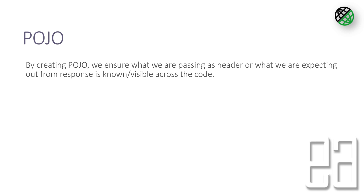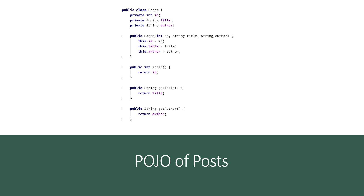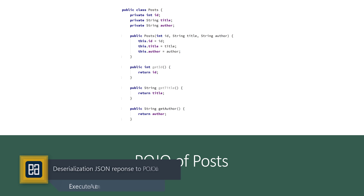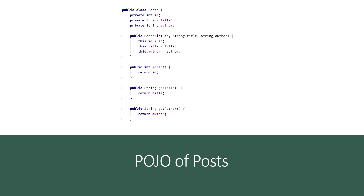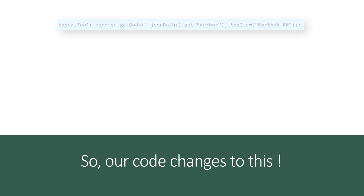For our POST operation, the POJO is going to look something like this. We create a class with a private int ID, private String title, and private String author. It has a constructor that takes in these values, and we use getter and setter operations for all of them — a basic POJO structure.